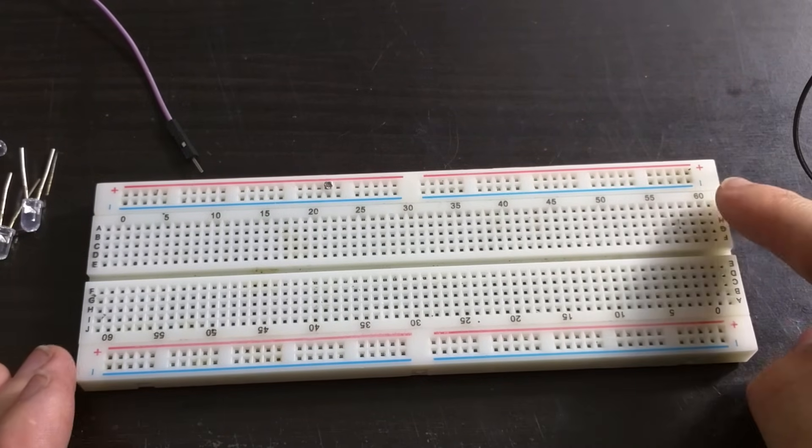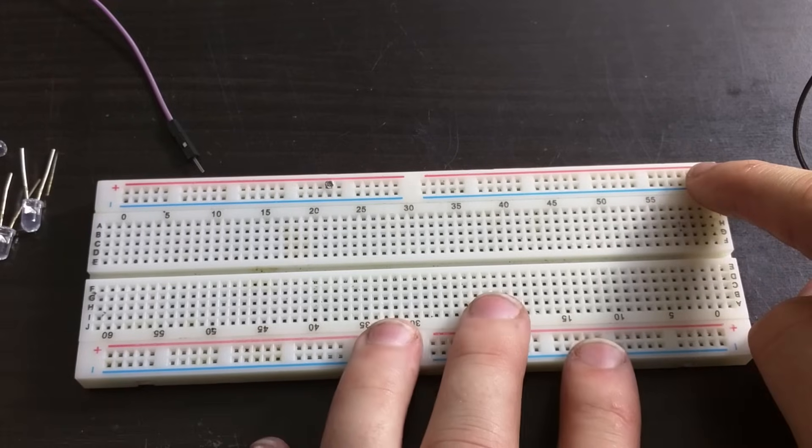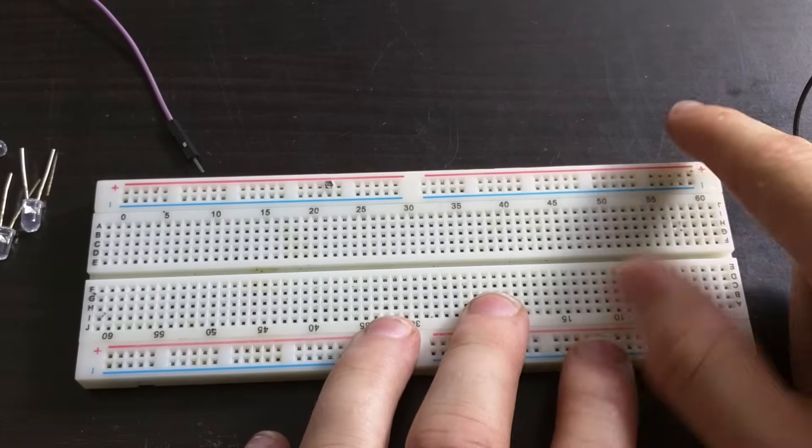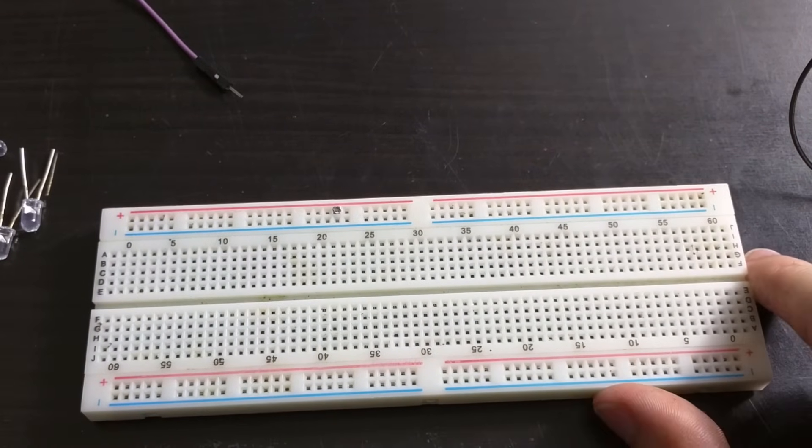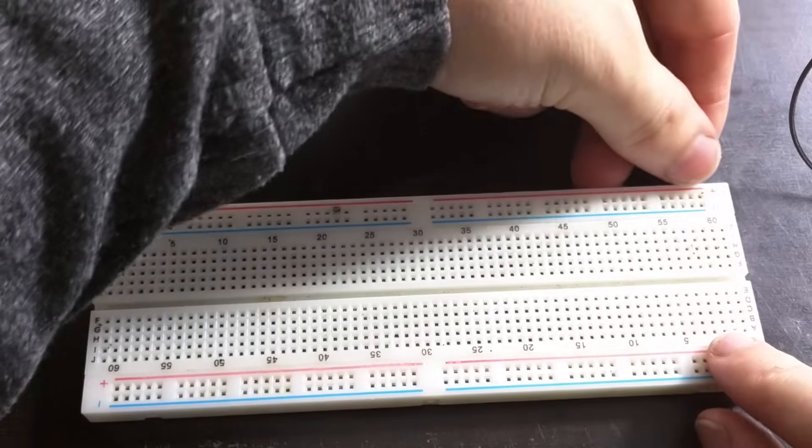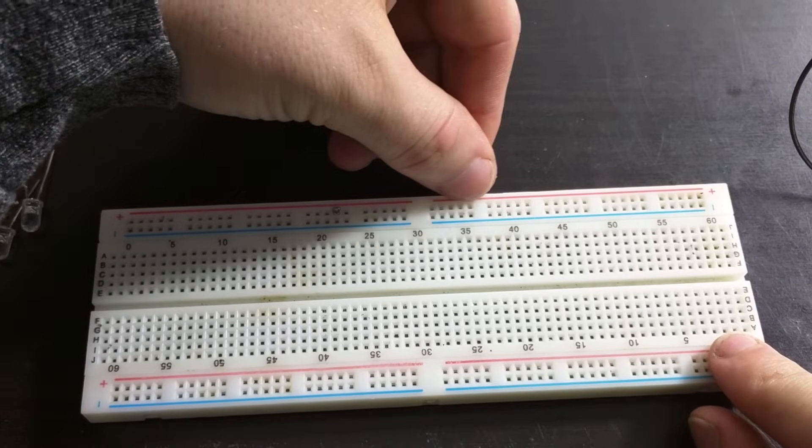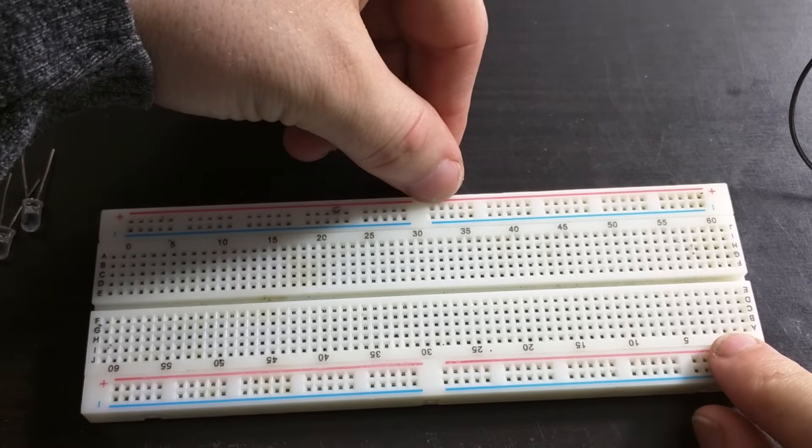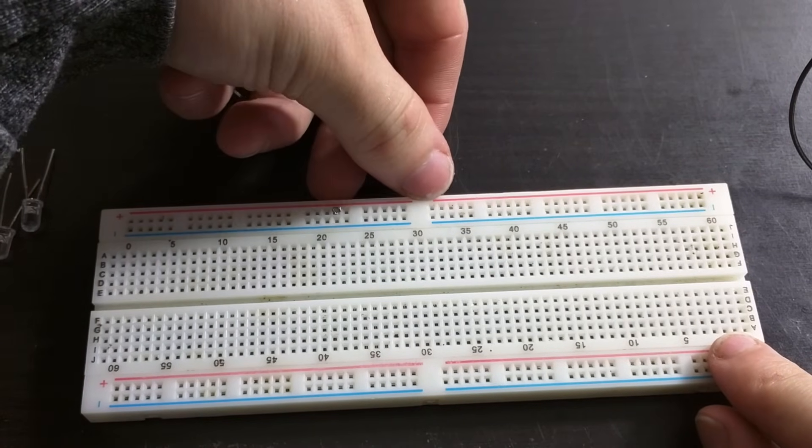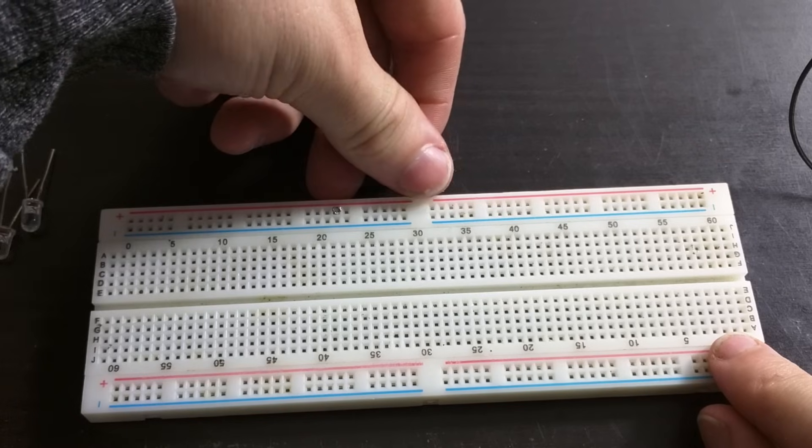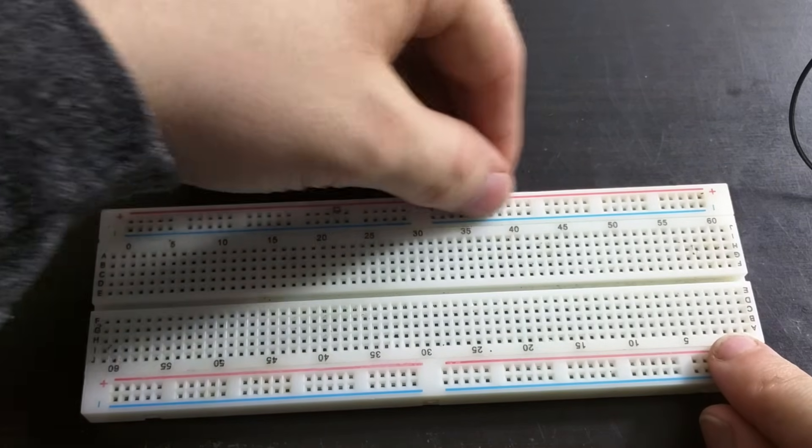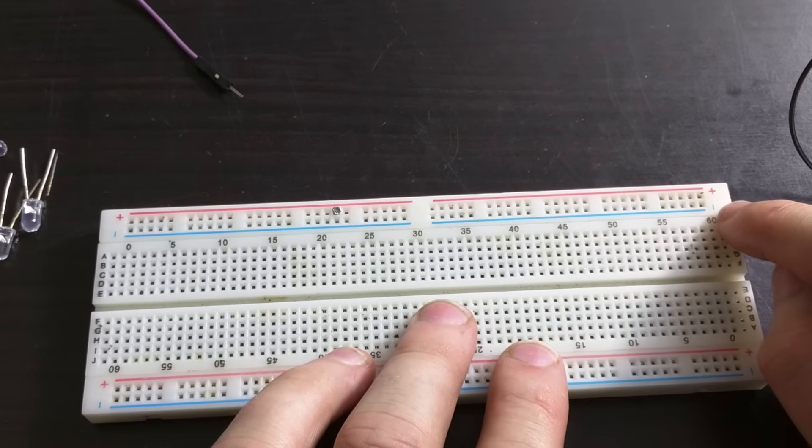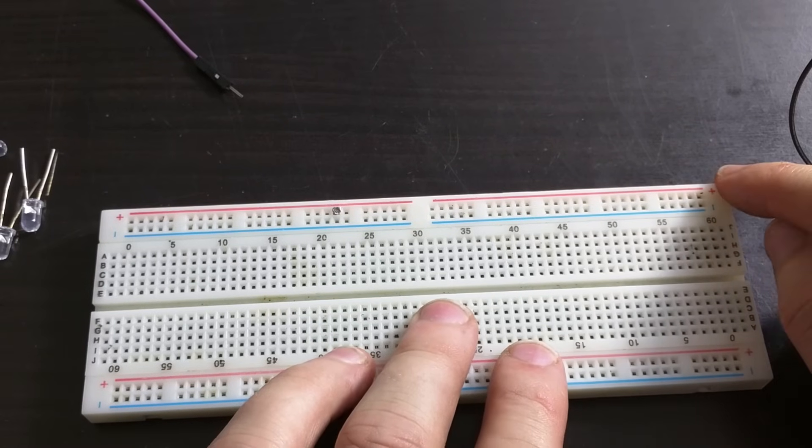And on most, if not all breadboards, there is also two other connections on the side or the top, depending on which orientation you have it at. And those are the power rails. So these rails are across here all electrically common, unless you have a break on the illustration there, which means that between these breaks, this side is not common with this side. And you can see that there is one label negative and one label positive.